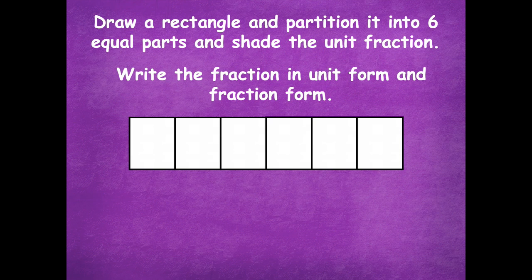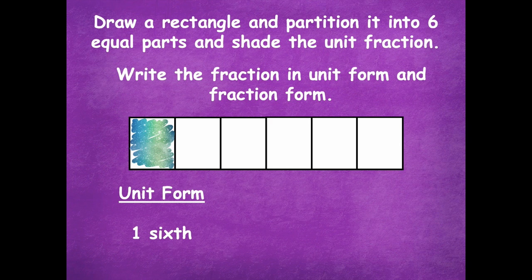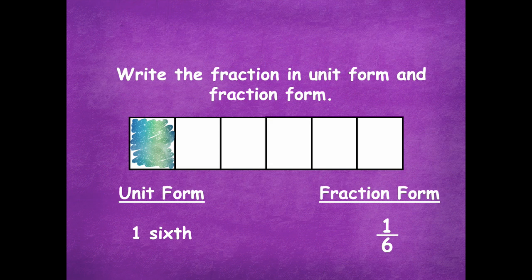Here's my shape. Your rectangle could look a little different — you could have drawn it vertically; I drew it horizontally. As long as you have six equal parts and you shade one of them, you're good. Unit form would be 'one-sixth,' and our fraction form would be one-sixth written numerically. The one means one part is shaded, and the six represents the total number of equal parts.